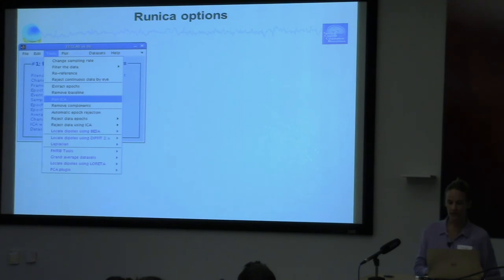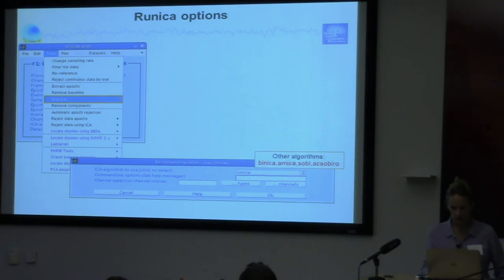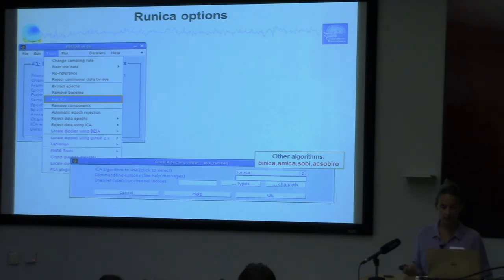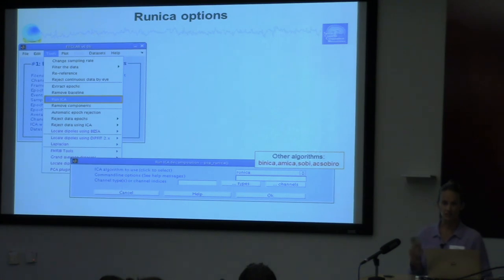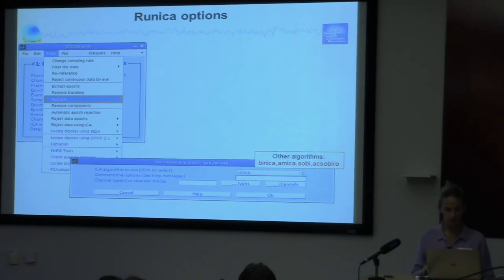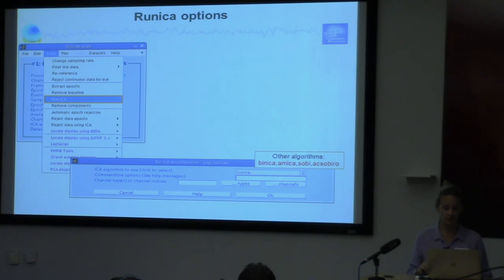The Run ICA option is under the Tools menu. At the top you can choose multiple different algorithms. We usually use runica — that's the standard one. Binica is also very comparable, using basically the same Infomax algorithm but much faster since it runs all the data in Linux in the background rather than in MATLAB. So it's much faster if you want to run through subjects quickly. There are also other algorithms you can play with, but we prefer Infomax.